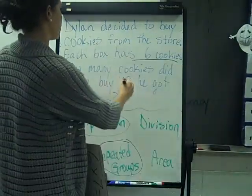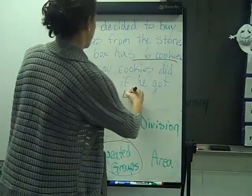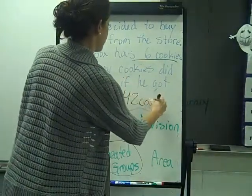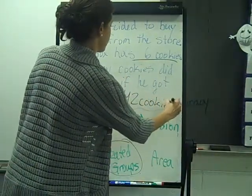So how many cookies did Dylan buy? Forty-two cookies, if you bought seven boxes of six cookies.